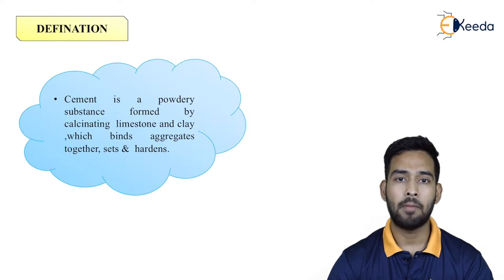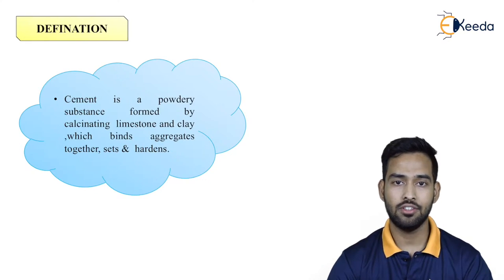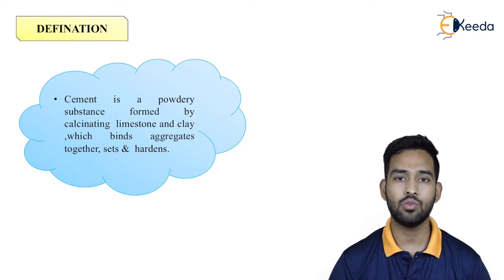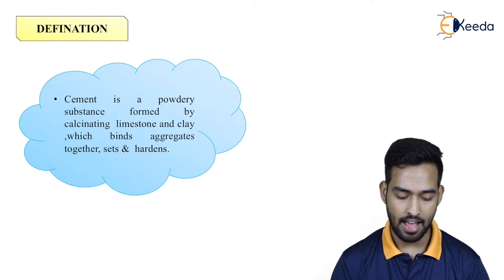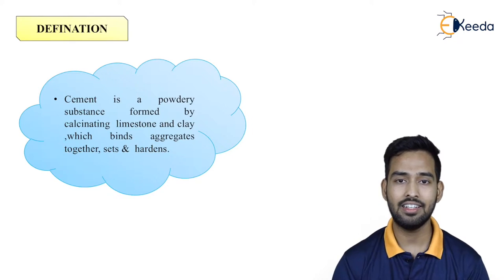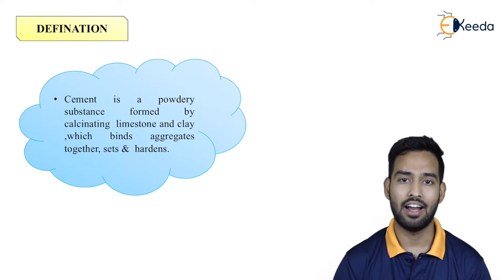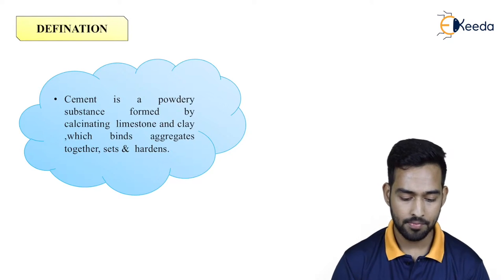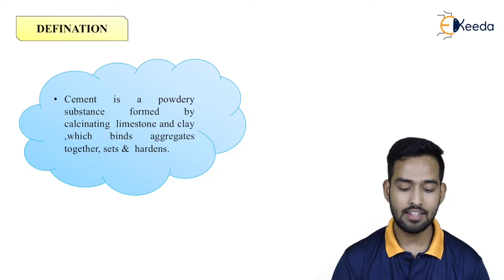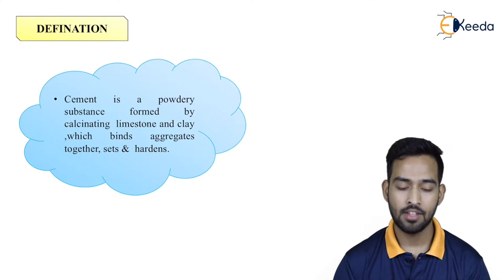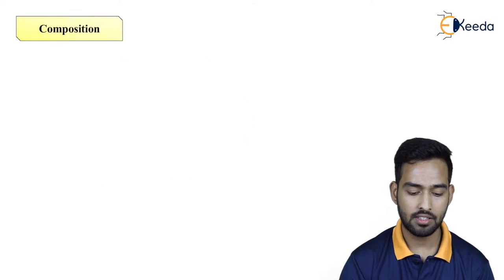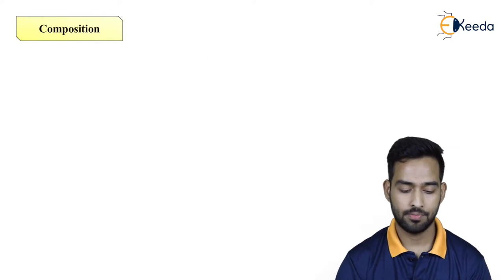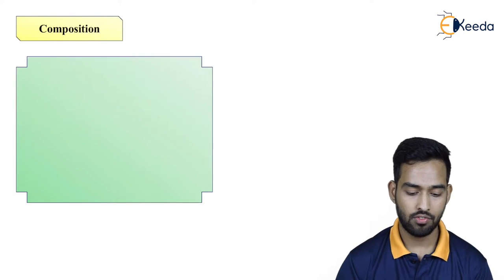Cement is a binding agent which binds aggregates together and it will set and harden. It is formed by calcinating limestone and clay. In the further slide, we will discuss about the compositions of cement.